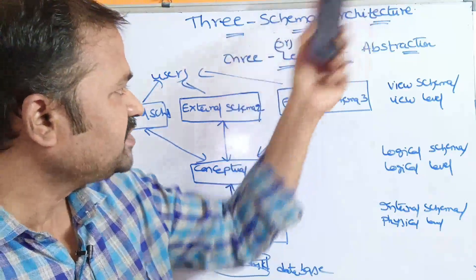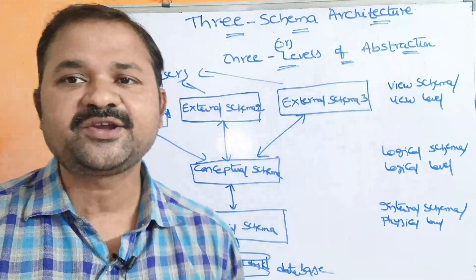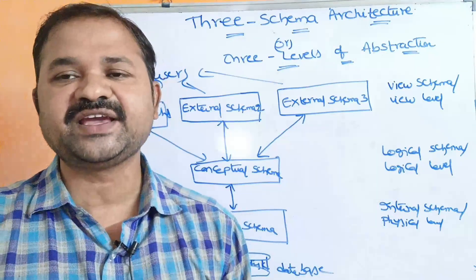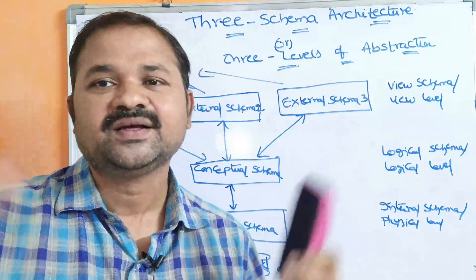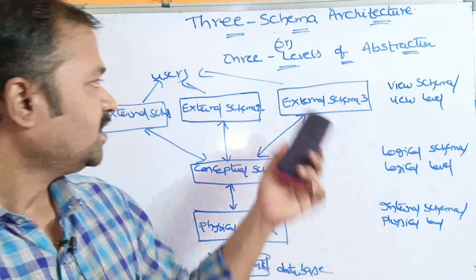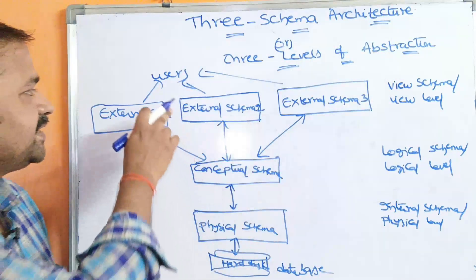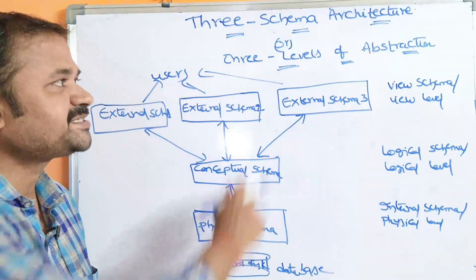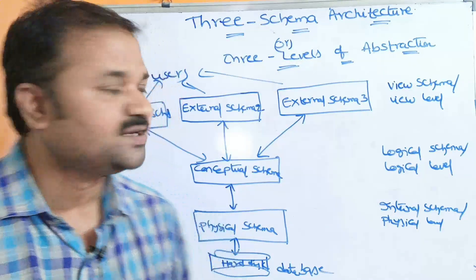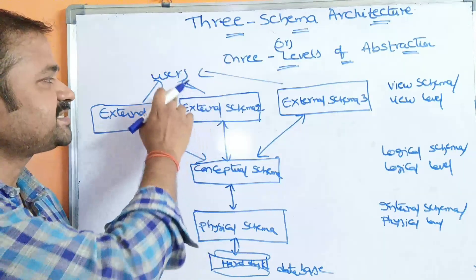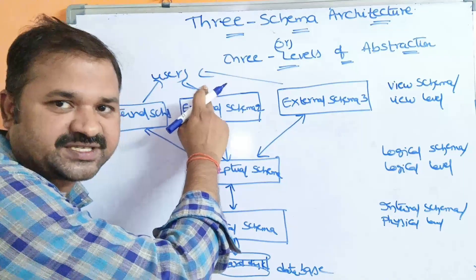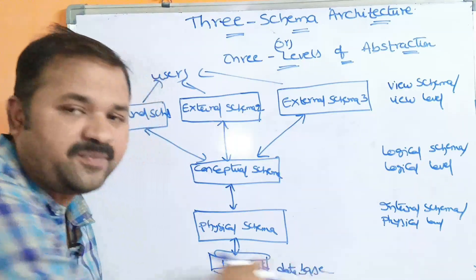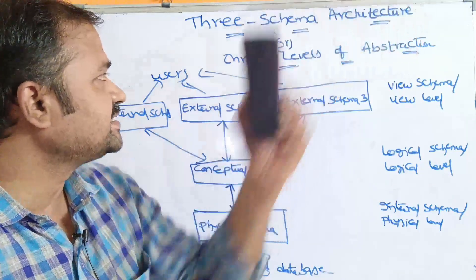The major need of this architecture is in order to implement data abstraction — showing only a useful piece of information and hiding that vast amount of data. One more major goal is to separate the user application from the database, and this three schema architecture achieves that separation.